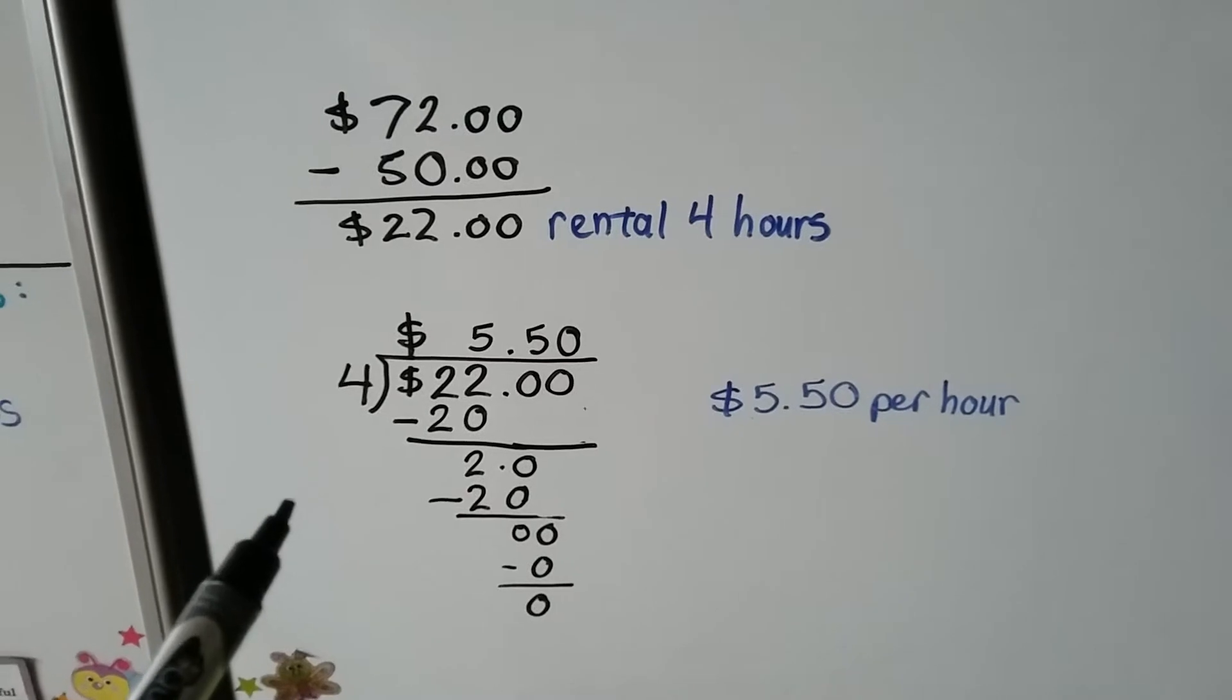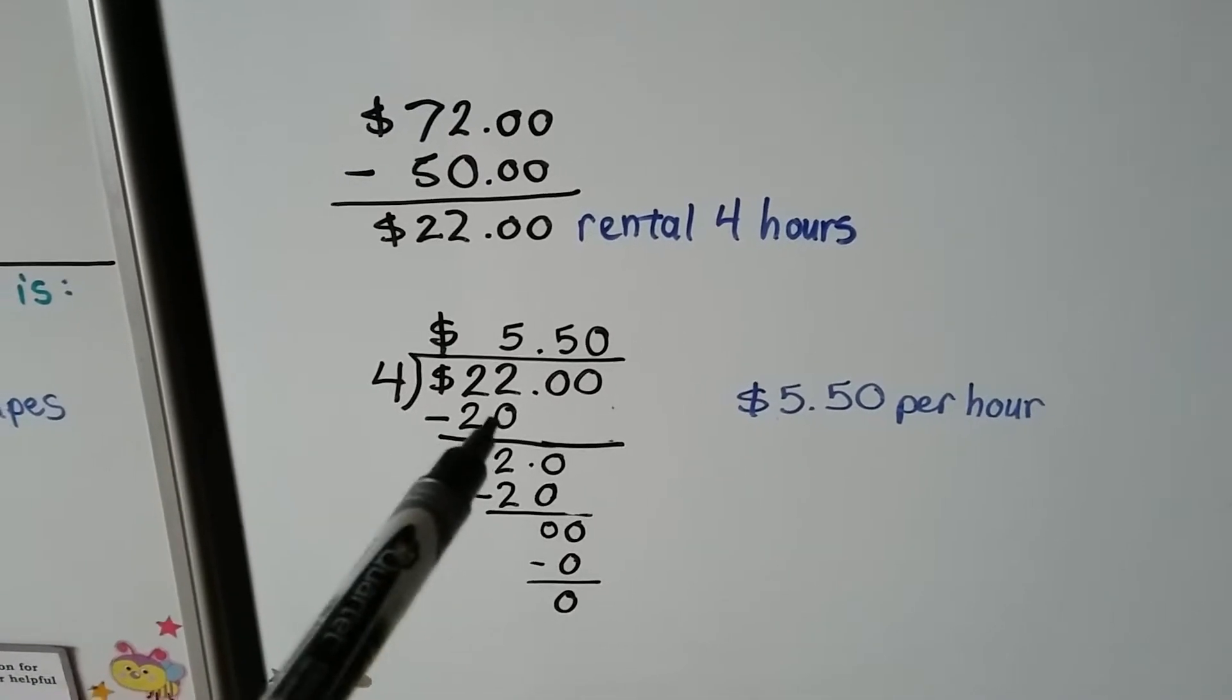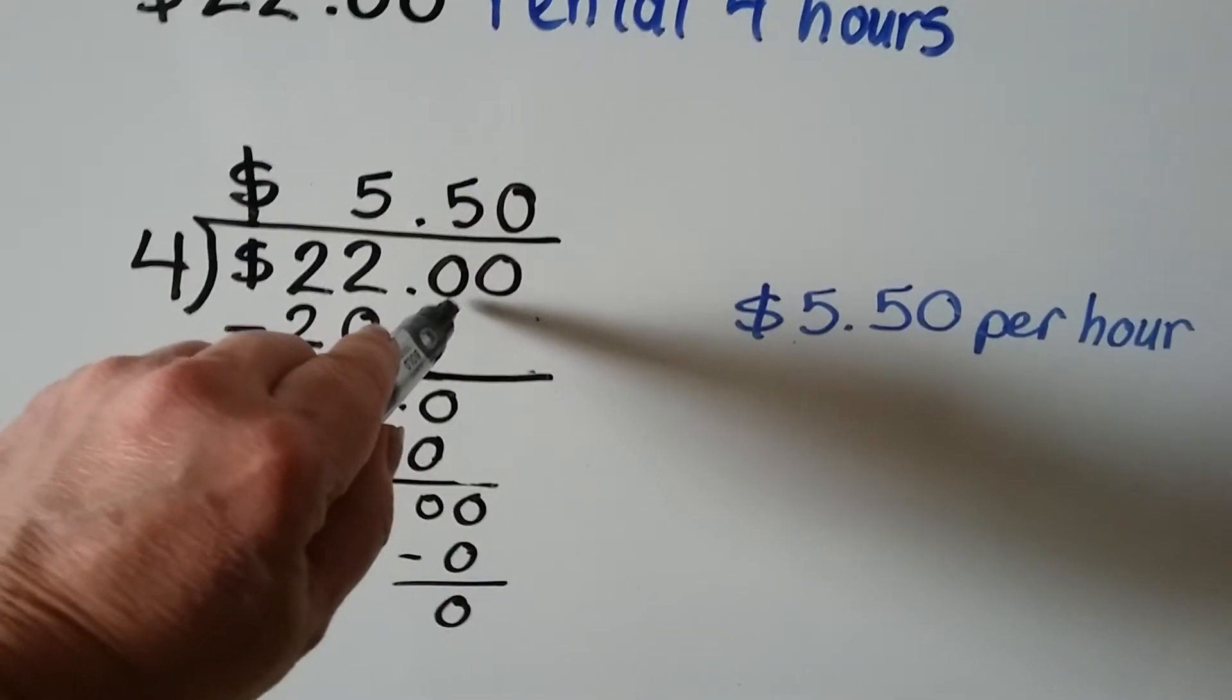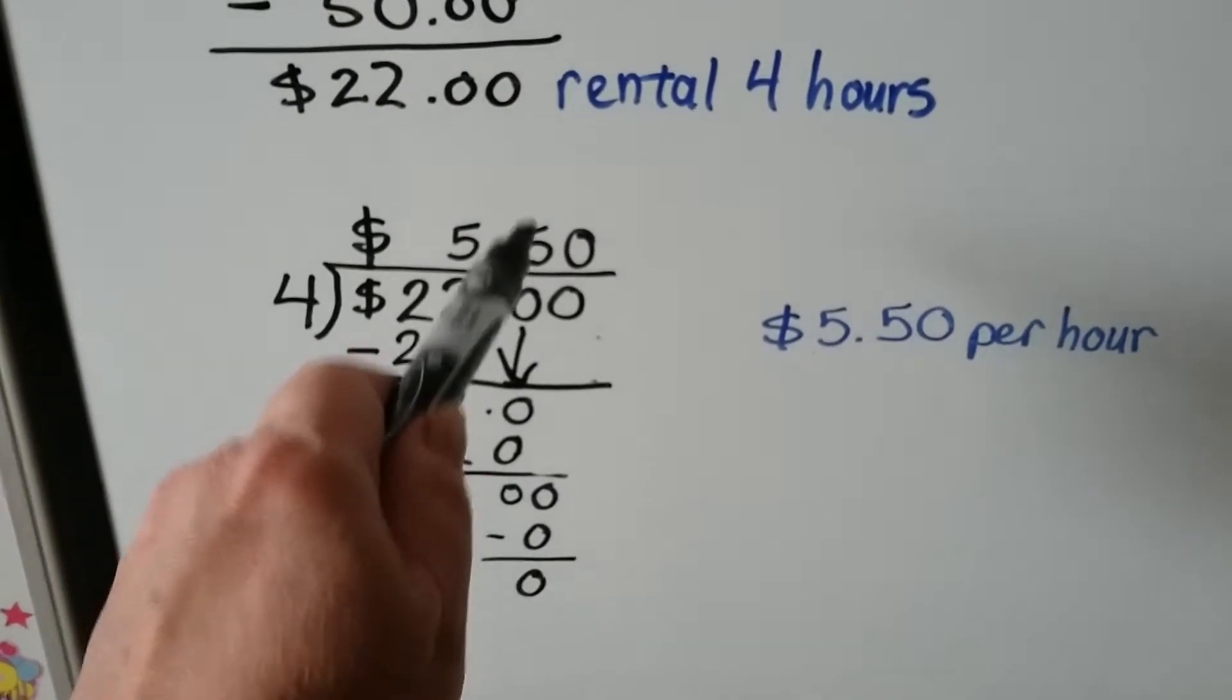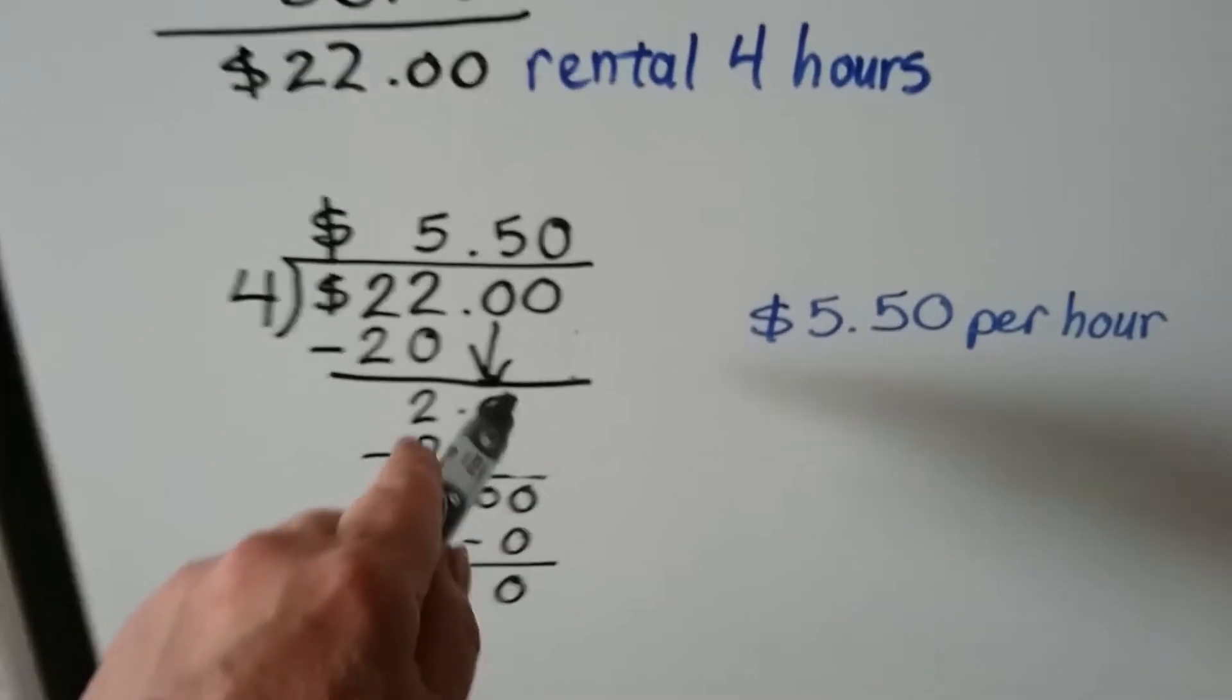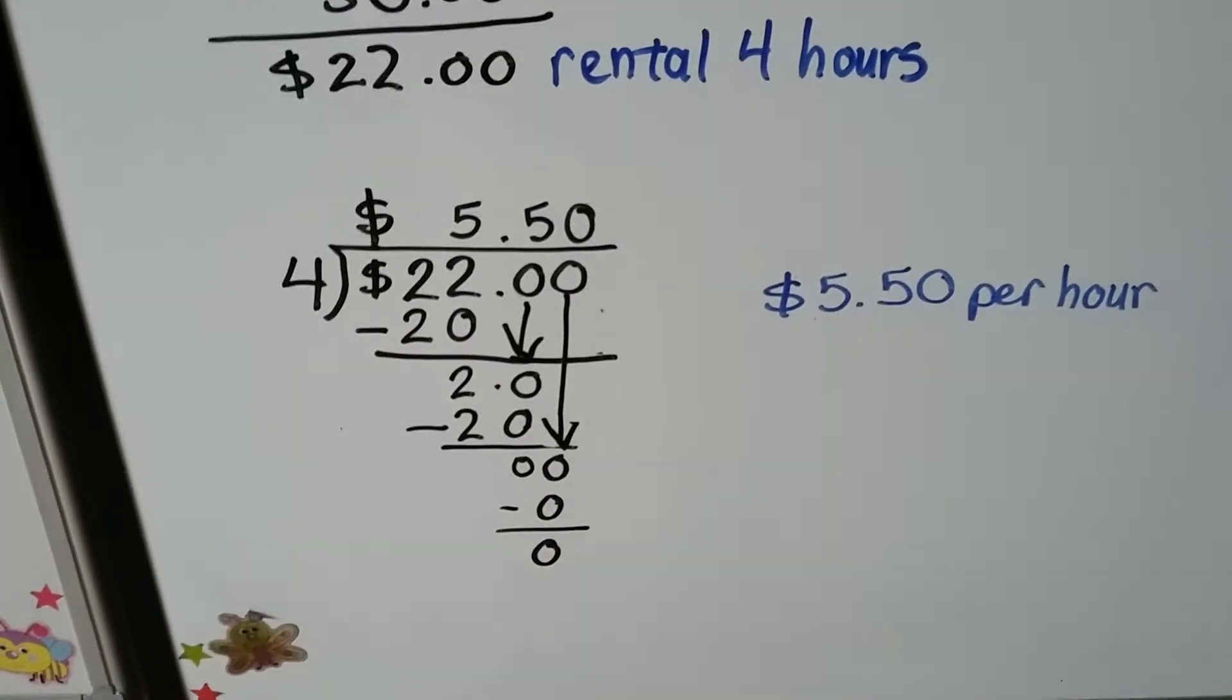We do some long division. Four goes into 22 five times. Four times five is 20. We subtract it. Our difference is a two. It's the zeros turn to come down for long division. Now we do four goes into 20. Four times five is 20. So we subtract the 20 and get a zero. Now it's this zeros turn to come down. Four can't go into zero. Four goes into zero zero times.